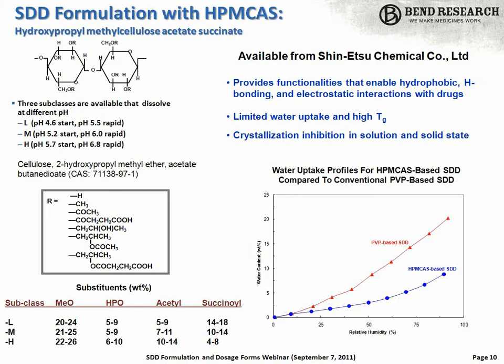It's again an enteric polymer, and there are three grades or classes that are available. They differ in the amount of acetate and succinate content. The three grades are designated as L, M, and H. L has the most succinic acid content and least acetate, so it dissolves at the lowest pH and is the most hydrophilic. The H polymer has the most acetate and least succinate content, so it dissolves at the highest pH and is the most hydrophobic.